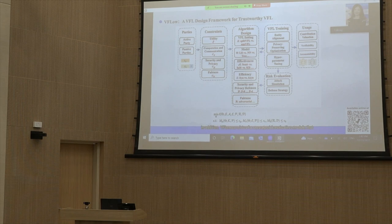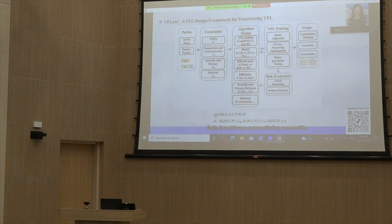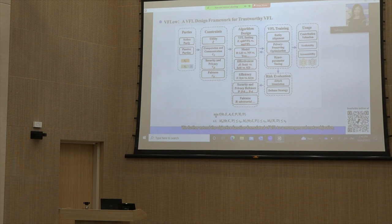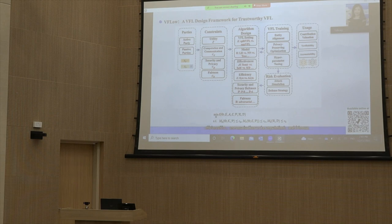VFL-Flow consists of a separate risk evaluation module that comprehensively evaluates data attacks and defense strategies. For model usage, party contributions, accountability, and verifiability tools are necessary for a sustainable and trustworthy federation. We further extend the objective function of VFL to a more general meta-objective in which we want to minimize the main task loss, i.e., maximize utility, constrained by privacy, efficiency including communication and computation, and fairness.